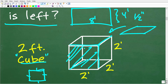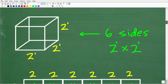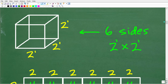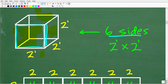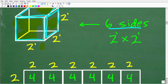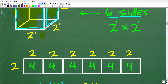So we're going to need these six sides, and all the sides are two feet by two feet. Here is our two-foot-by-two-foot cube. How many sides do we have? We have six sides: the front, the back, the right, the left, and the top and bottom. So we're going to need six sides to build this cube, and each side is going to be two feet by two feet.